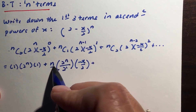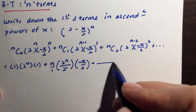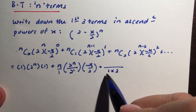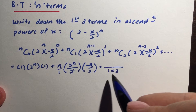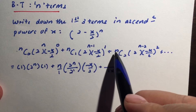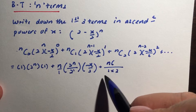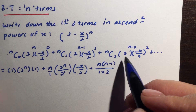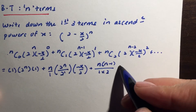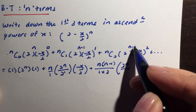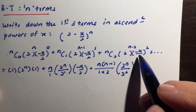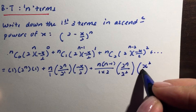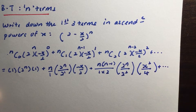For nC2, the pattern is: when the bottom is 2, the numerator has 2 terms — n times (n-1) — and the denominator is 1 times 2. Using the law of indices, 2^(n-2) becomes 2^n over 2 squared. The term is negative, but since we have an even power, it becomes positive x squared over 4.